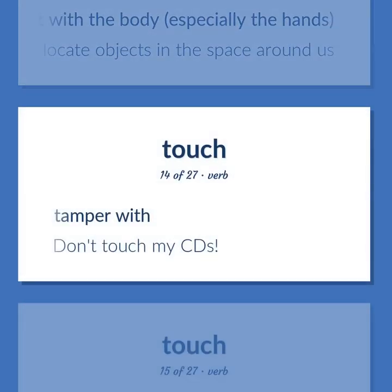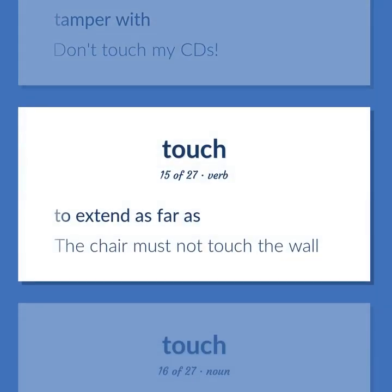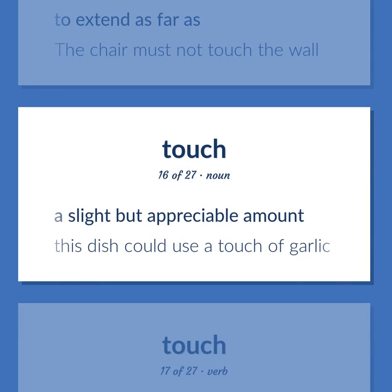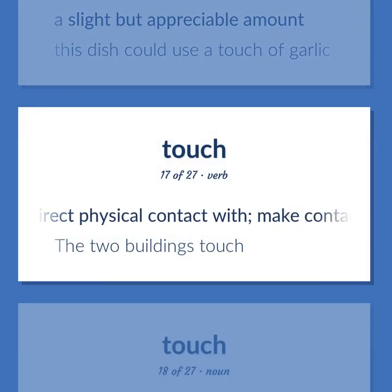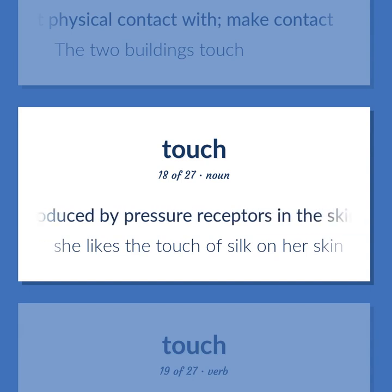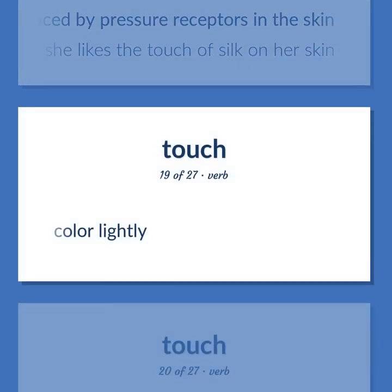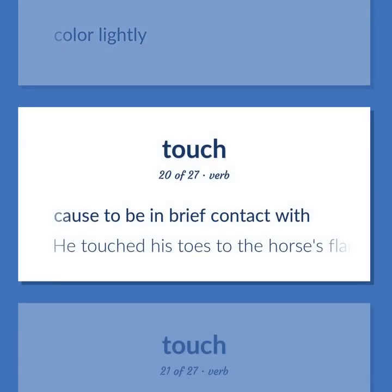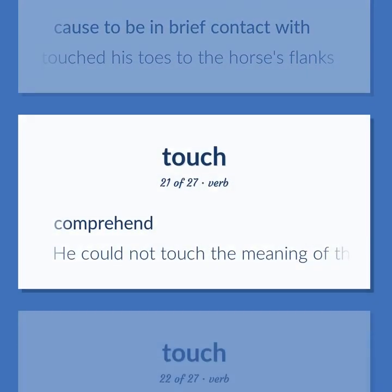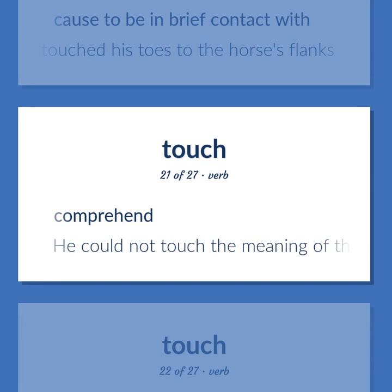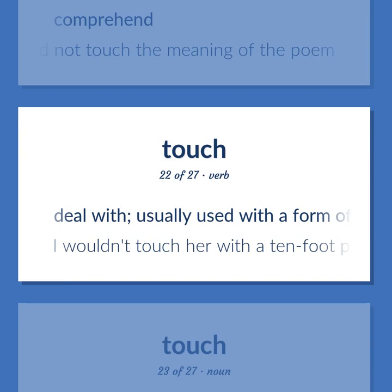TOUCH: Tamper with — 'Don't touch my CDs.' To extend as far as — 'The chair must not touch the wall.' A slight but appreciable amount. 'This dish could use a touch of garlic.' Be in direct physical contact with; make contact. 'The two buildings touch.' The sensation produced by pressure receptors in the skin. 'She likes the touch of silk on her skin.' Color lightly. Cause to be in brief contact with. 'He touched his toes to the horse's flanks.' Comprehend — 'He could not touch the meaning of the poem.' Deal with, usually used with a form of negation. 'I wouldn't touch her with a 10-foot pole.'